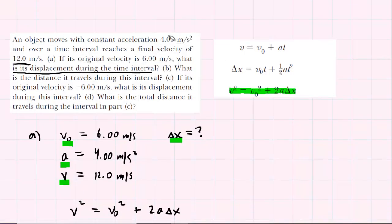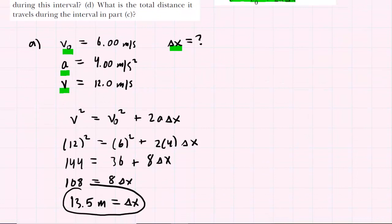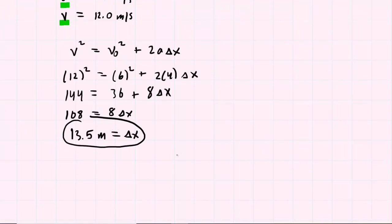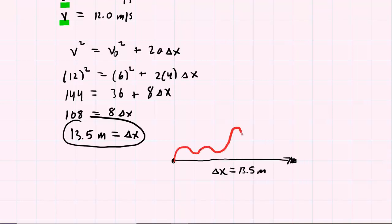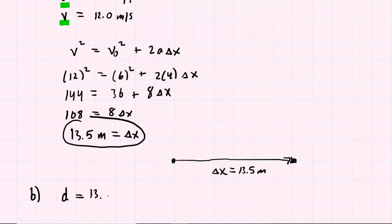Moving on to part B, which asks: what is the distance it travels during this interval? We calculated the displacement as 13.5 meters. Because the object traveled in a straight positive direction, the distance will also be 13.5 meters. The only way the distance would have been different is if the particle took some sort of convoluted path to reach its final destination, but it just traveled in a straight line. So the answer to part B is that the distance also equals 13.5 meters.